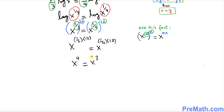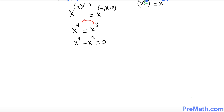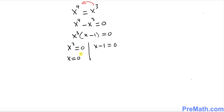Moving x to the power 3 to the left hand side gives us x to the power 4 minus x to the power 3 equals 0. Factoring out x to the power 3, which is common, we get x cubed times (x minus 1) equals 0. Splitting: x cubed equals 0 gives x equals 0, and x minus 1 equals 0 gives x equals 1.